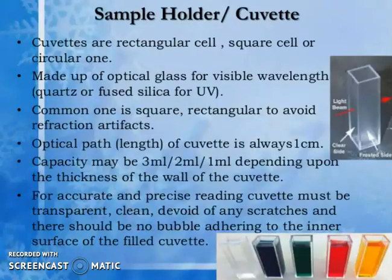Cuvettes (sample holders): cuvettes are rectangular, square, or circular cells made of optical glass for visible wavelength, or quartz/fused silica for UV. The common shape is square or rectangular to avoid refraction artifacts. The optical path length is always 1 cm; capacity may be 3 ml, 2 ml, or 1 ml depending on the wall thickness. For accurate readings, cuvettes must be transparent, clean, devoid of scratches, and free of bubbles adhering to the inner surface.